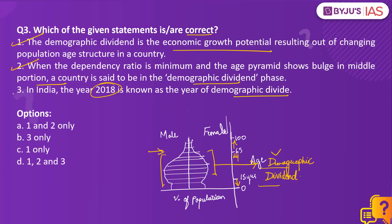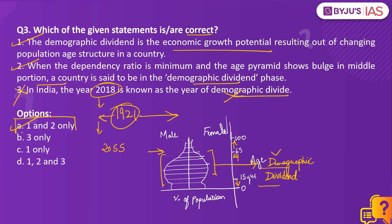Since the year 2018, India's working age population has grown larger than the dependent population, and this bulge is expected to last until 2055 — or 37 years from its beginning. However, statement three is misleading: while the working age population has grown since 2018, that year is not called the year of demographic divide. The year of demographic divide is 1921, as before that year population growth was erratic, but after 1921 there has been a constant increase in population. Therefore the right answer is option A, one and two only.